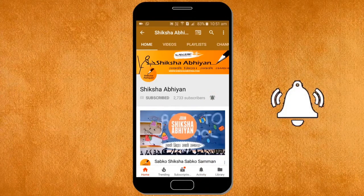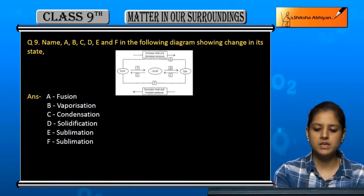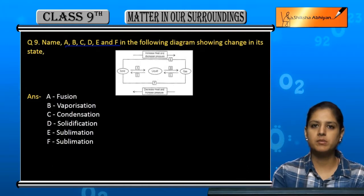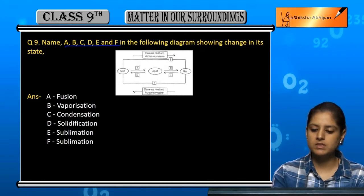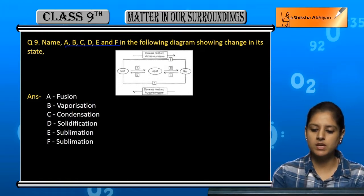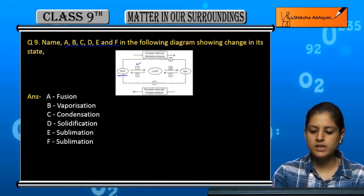Question number nine: Name A, B, C, D, E, and F in the following diagram showing change in its state. A diagram is given with points A, B, C, D, E, F marked. It's naming A, B, C, D, E; a point here is solid, liquid.